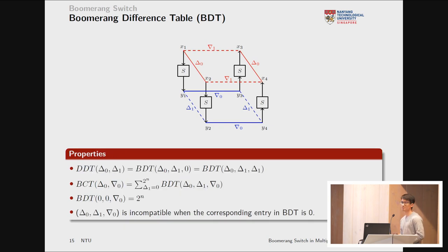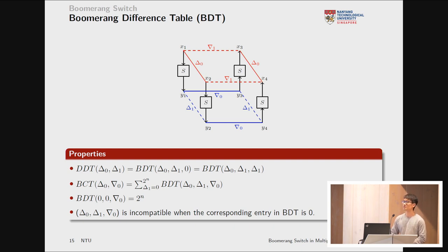BDT properties: since it combines DDT and BCT, we can convert BDT to DDT when ∇0 = 0 or ∇0 = Δ1, and also convert to BCT. In some cases we can use DDT and BCT to implicitly evaluate the boomerang switch. The BDT can also detect incompatibility when the corresponding entry is zero — for example, it easily detects the incompatibility in the previous AES two-round EM example.